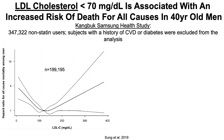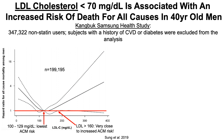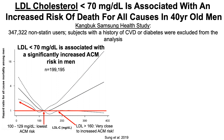This study included 199,000 men not taking statins. On the y-axis, we're looking at all-cause mortality risk plotted against LDL concentration on the x-axis. The lowest all-cause mortality risk was found for LDL between 100 to 129 milligrams per deciliter. Placing the hazard ratio bar at one, areas where the 95% confidence interval dashed lines fall completely above the reference line indicate higher risk. LDL less than 70 milligrams per deciliter is associated with a significantly increased all-cause mortality risk in men.